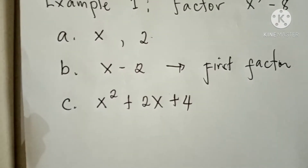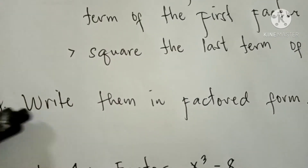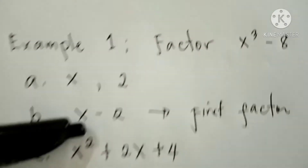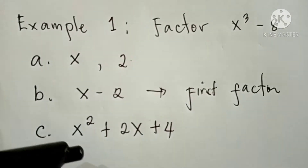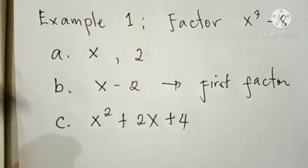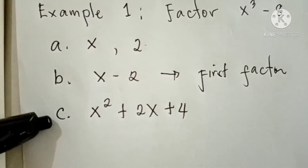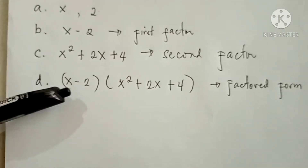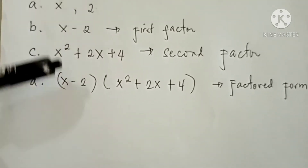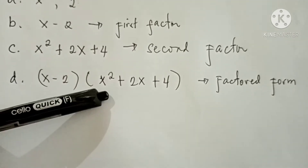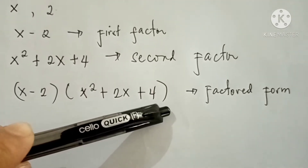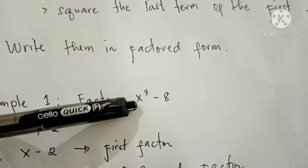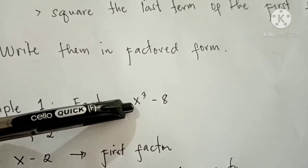Are we done? No, there is still the last step: write them in factored form. We write the first factor and the second factor. The second factor is x squared plus 2x plus 4. So the answer — the factored form of x cubed minus 8 — is (x − 2)(x² + 2x + 4).